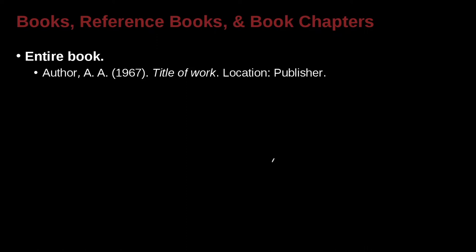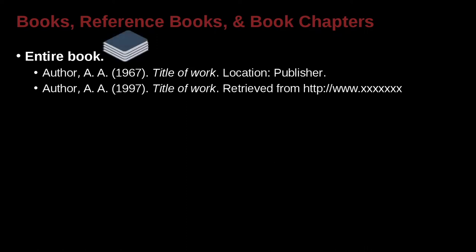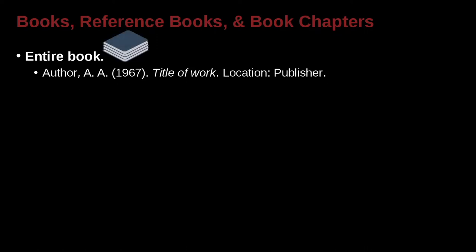How about books or book chapters? For entire books, here's an example. We have the author, which is again going to be the last name, first name, middle name, then the year, the title of the book in underline or italics, and then the location of the publisher — the city the publisher's in and the publisher's name.